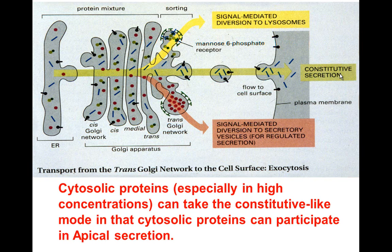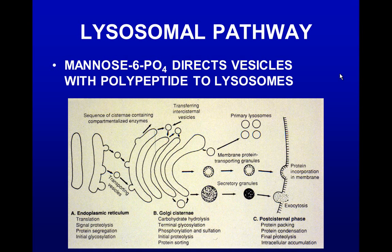Cytosolic proteins, especially in high concentration, can take the constitutive-like mode — cytoplasmic proteins not membrane-bound can participate with apical secretion. If they increase to a high enough number, they will leak out of the cell as if it were constitutive secretion. For the lysosomal pathway, mannose-6-phosphate directs vesicles to the lysosome. In the process coming through the endoplasmic reticulum, mannose-6 is added, and if the protein is phosphorylated in the Golgi apparatus, it will be designated to go to a primary lysosome.